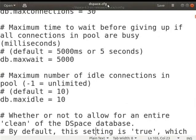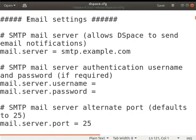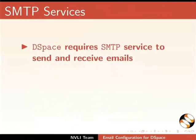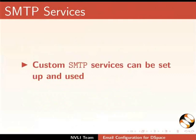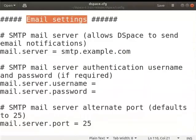Scroll down and locate the email settings section. DSpace requires SMTP service to send and receive emails. SMTP services like Gmail, SendInBlue, SendGrid, PeppyPost, AmazonSES or Mandrill can be used. Additionally, custom SMTP services can also be set up and used. In this demonstration, I will configure a Gmail SMTP mail server.